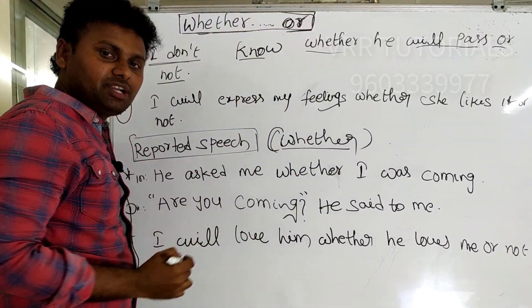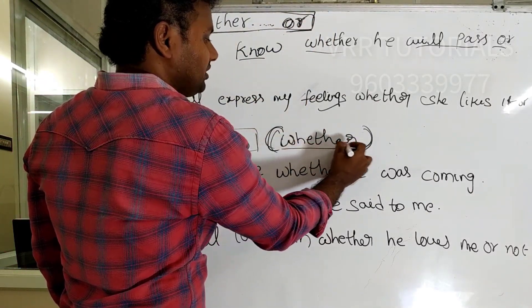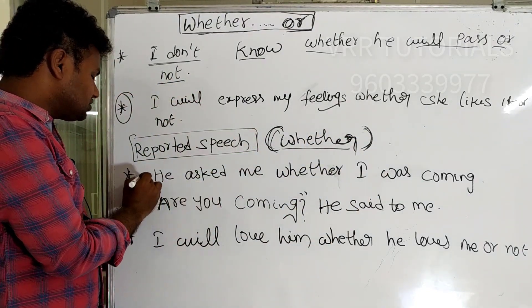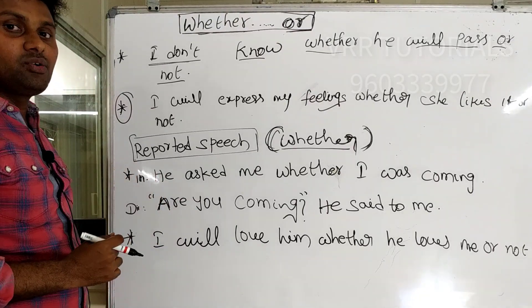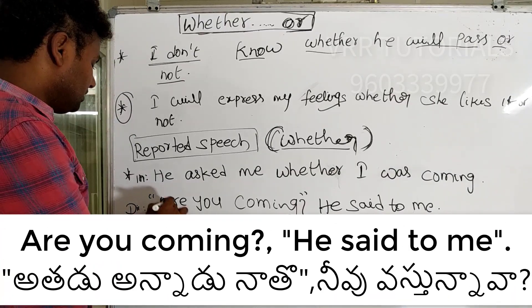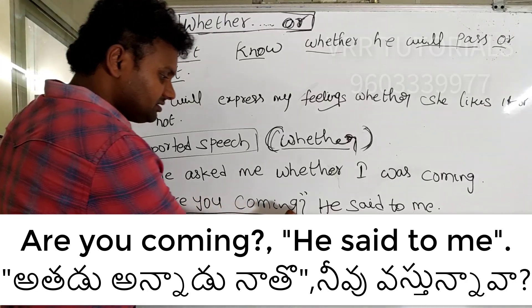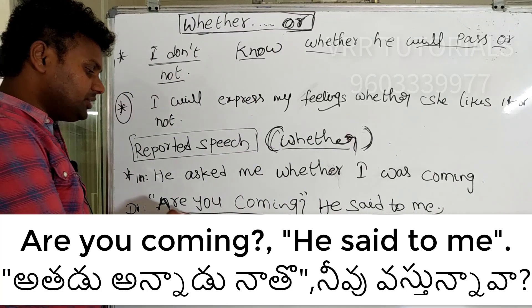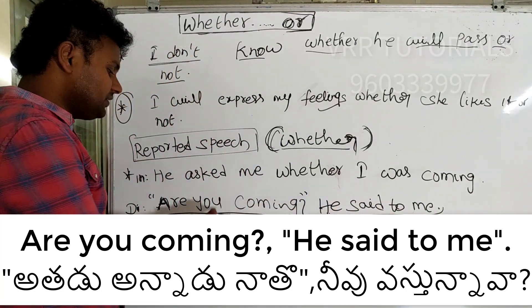Now let's look at the word 'whether' — spelled W-H-E-T-H-E-R. It is used to convert yes/no questions from direct speech into indirect speech. For example, in direct speech: 'Are you coming?' he said to me.